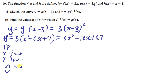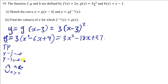If a is less than zero it's going to have a maximum value, meaning it faces down. When a is greater than zero it's going to have a minimum value, meaning it faces up. To find the y-intercept, you replace x with zero — in this case you just remain with 27, so the y-intercept is y equals 27.